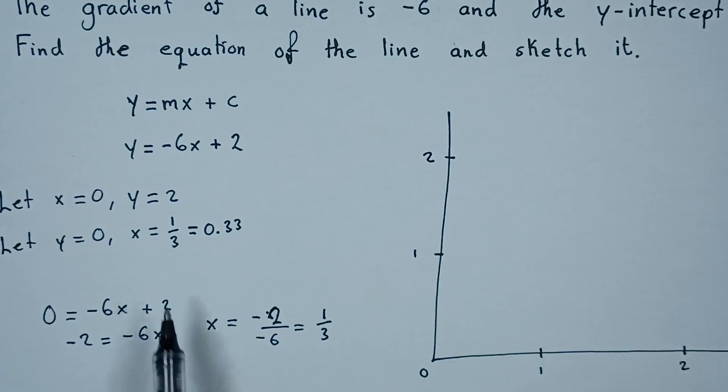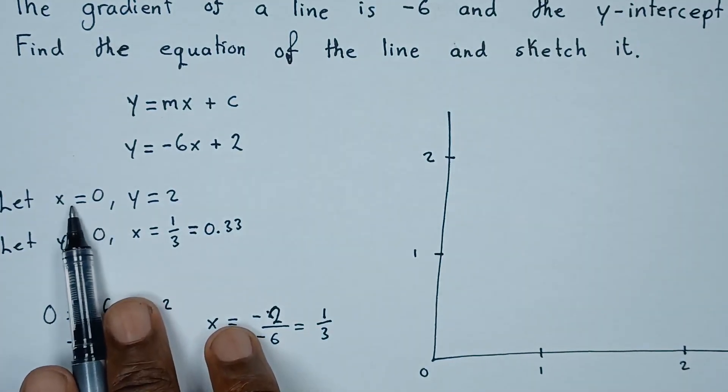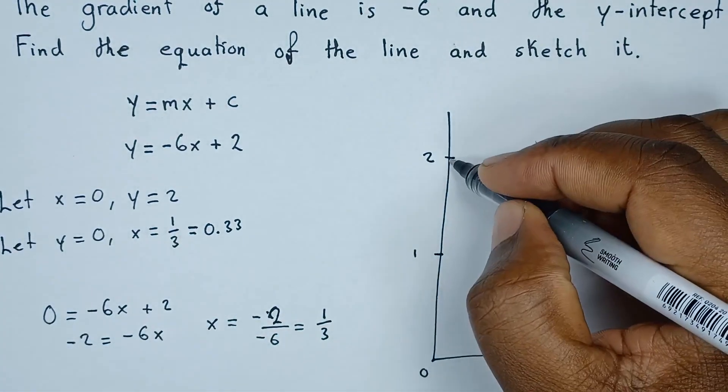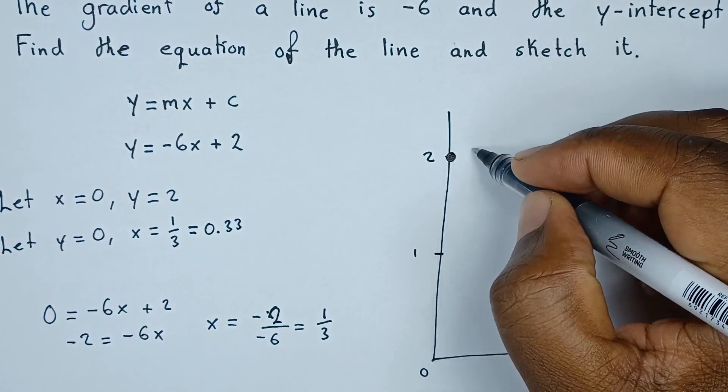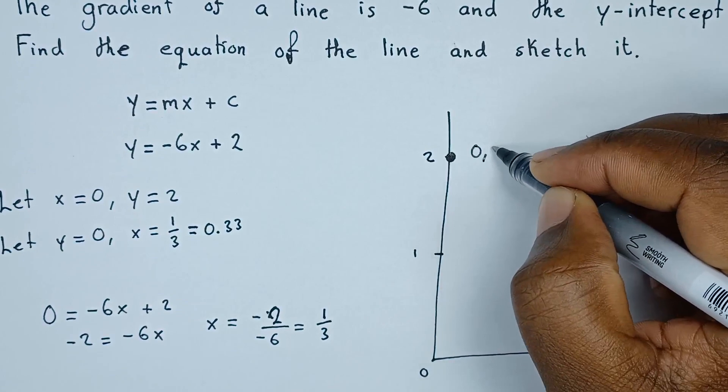So the first coordinate is when x is 0, y is 2. So the coordinate is this one here. This coordinate here is 0 comma 2.